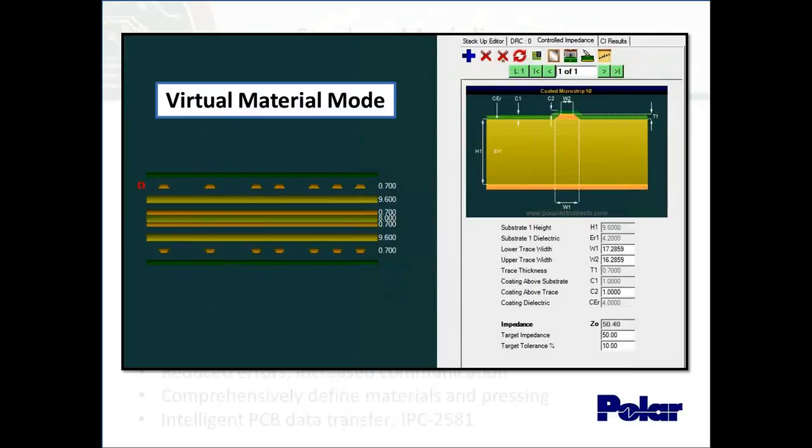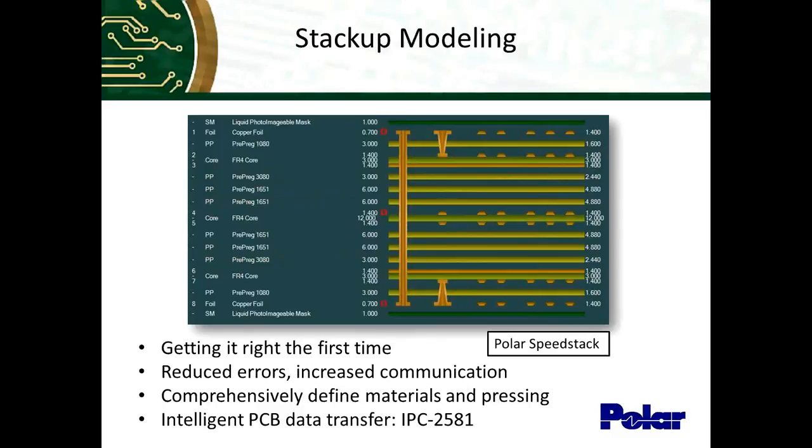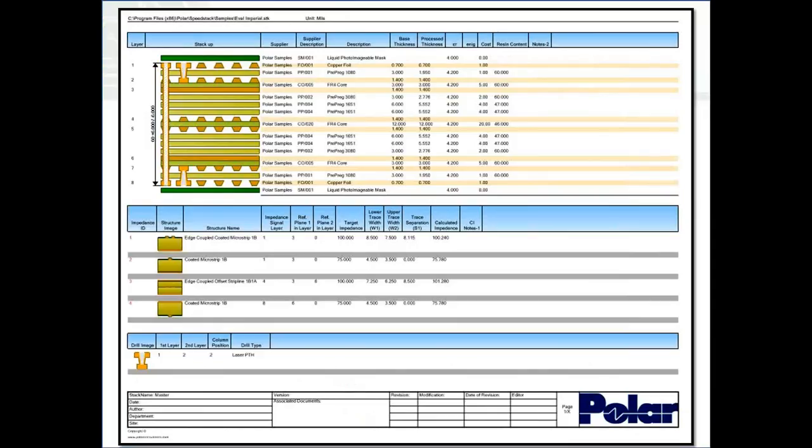Reduced errors, increased communication, obviously extremely important for stack-ups. Here's a screenshot of the technical report, which can be generated from Speed Stack. You'll see three sections, which you can customize to show all sorts of data about the materials, the base thickness, process thickness, dielectric constant, et cetera, all the controlled impedance structures, and the drills. This would be kind of the paper format of communicating stack data between different people or between the designer and the fabricator.